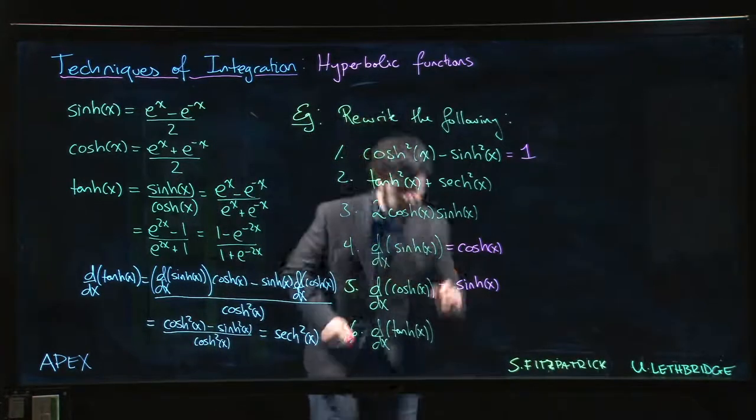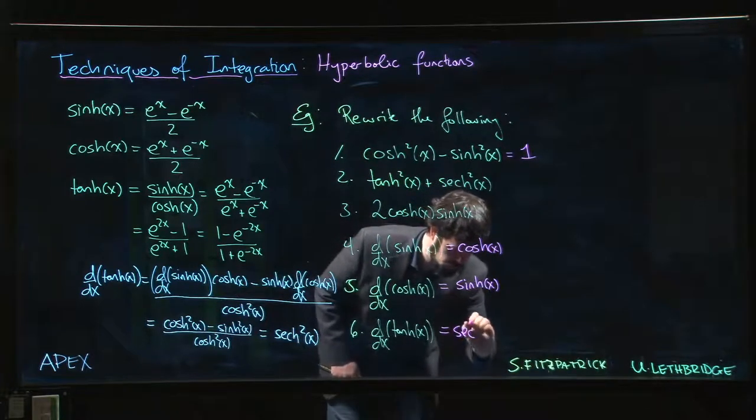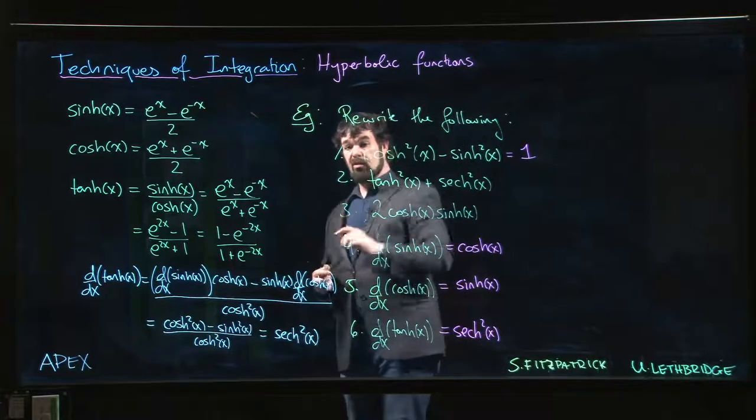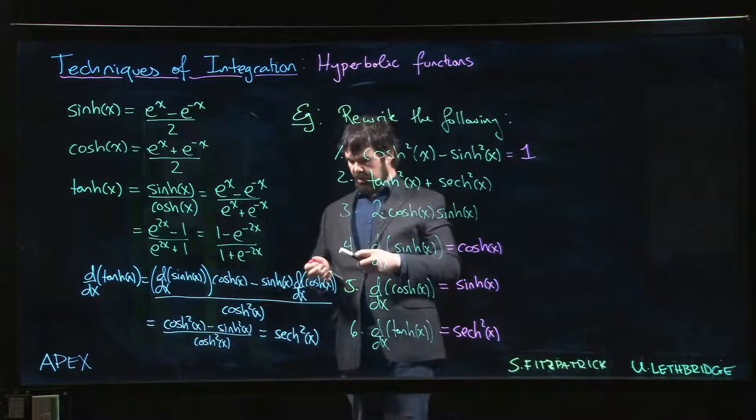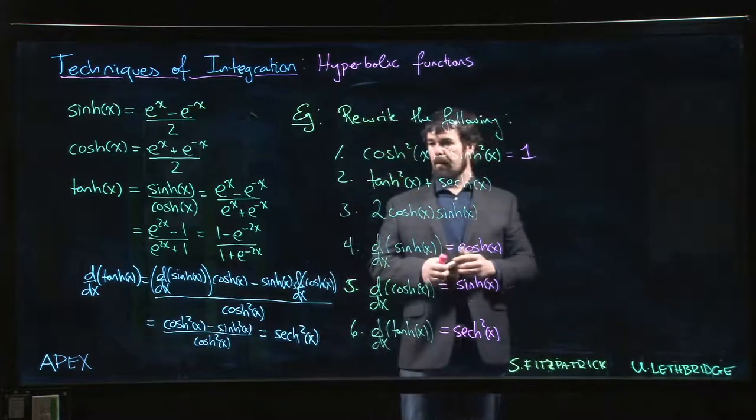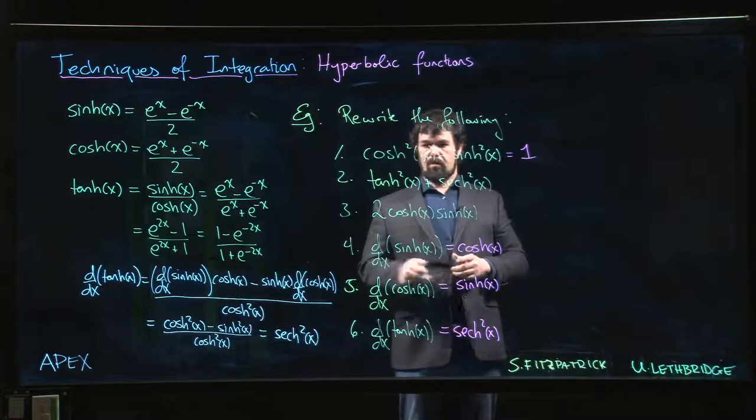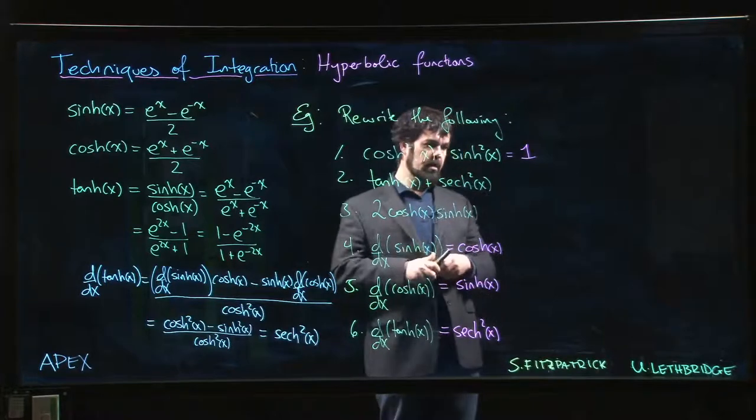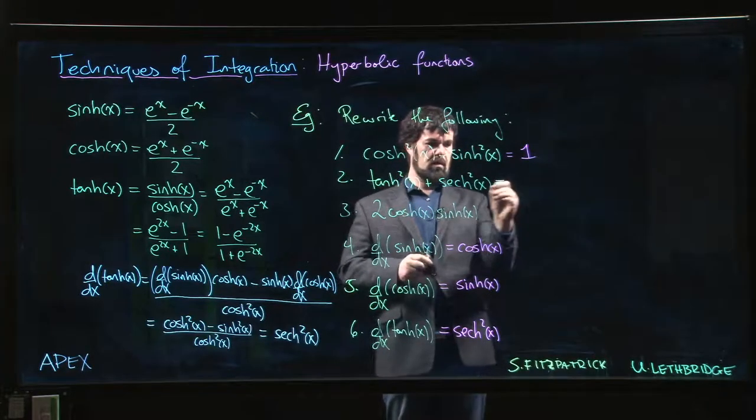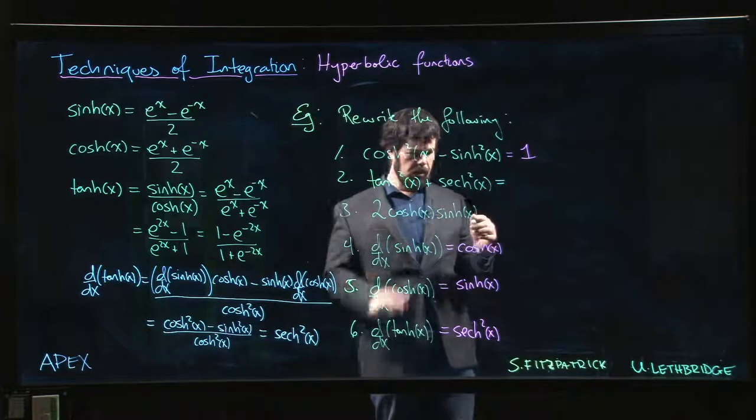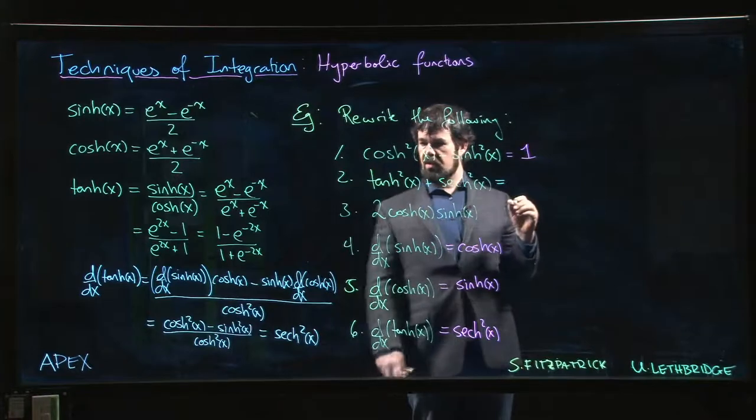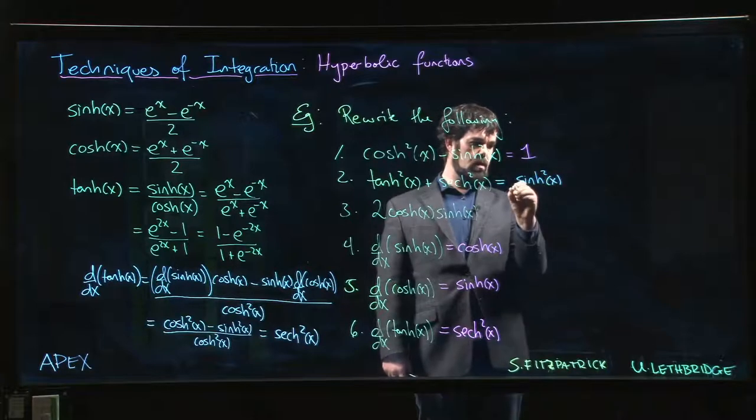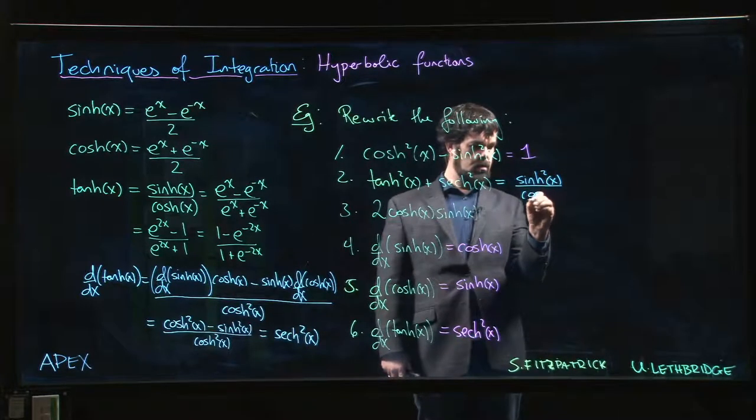That leaves us with these two identities here to play around with. Let's try this one first. Now we can get right into the definitions of these, but maybe let's try writing in terms of sinh and cosh - that's typically a safe bet if you're not sure what to do. So tanh squared, that's sinh squared over cosh